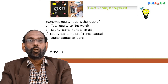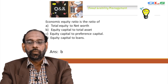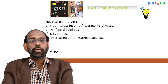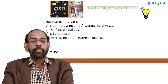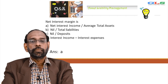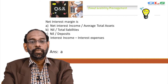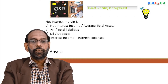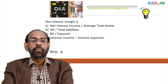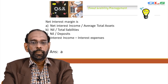Net interest margin is — A: net interest income vis-a-vis average total assets, B: NII vis-a-vis total liabilities, C: NII vis-a-vis deposits, D: interest income minus interest expenses. Answer is A — net interest income vis-a-vis average total assets.